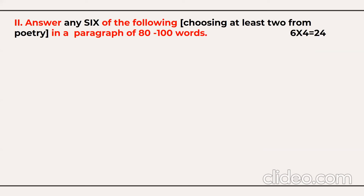That completes Section 1. Now we move to Section 2, where you write answers from the chapters and lessons. Here you must attempt six questions out of eight. Out of those six, a minimum of two questions must be selected from the poems. Do not select all questions from prose or from the play. If you don't choose two from poems, those answers will not be awarded marks. Six questions at four marks each gives you 24 marks total.